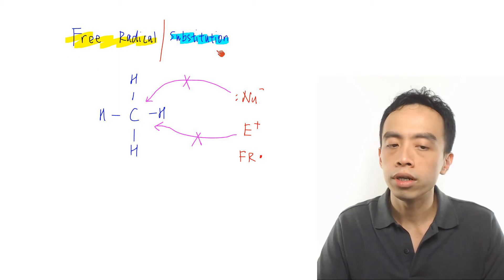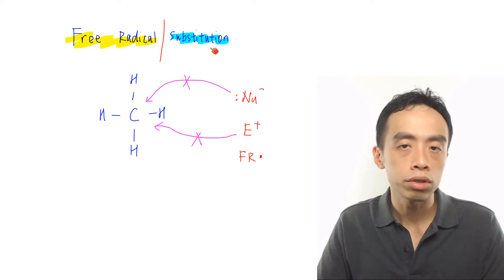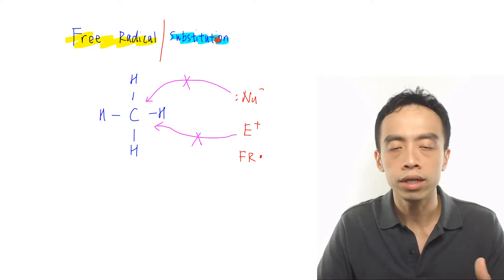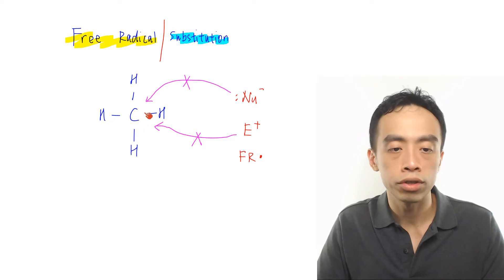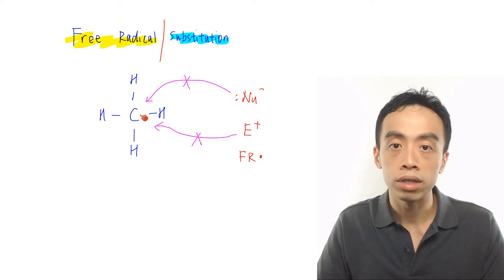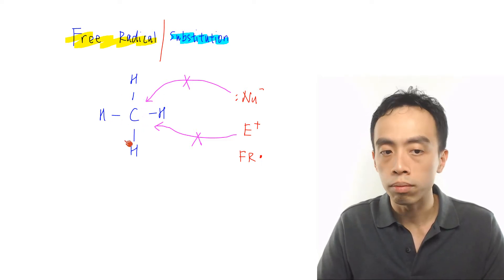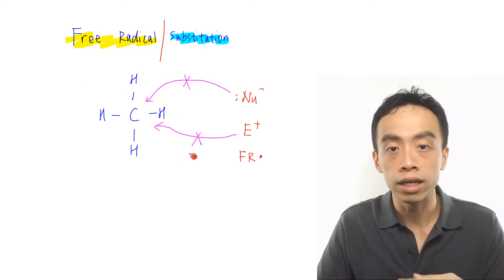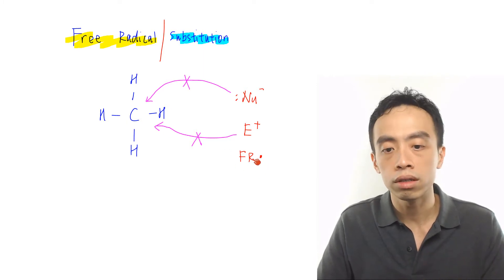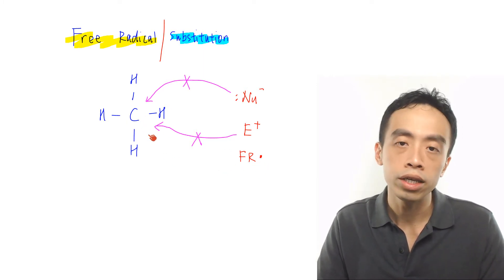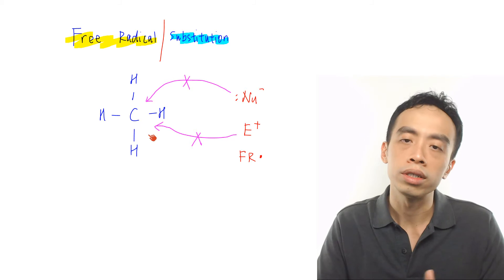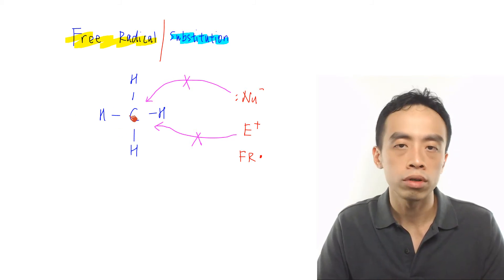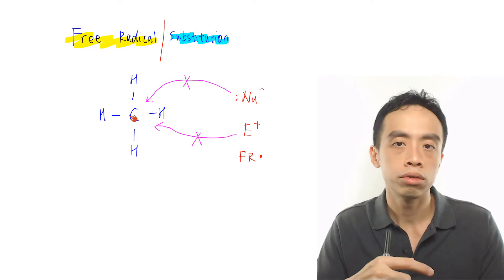Now the second portion we want to explain is: how come alkanes undergo substitution reaction? Why doesn't it undergo addition reaction? This is easier to explain because if I look at the degree of saturation of my carbon, my carbon is already saturated — it is bonded to four other species. So it is not capable of adding in another group. If my free radical is added to my carbon, then you have five bonds, which is not possible. Carbon can only form a maximum of four bonds. So since my carbon is saturated, it has to undergo substitution reaction.